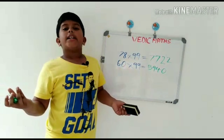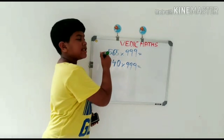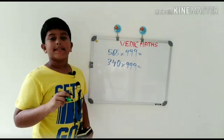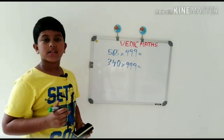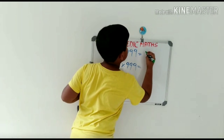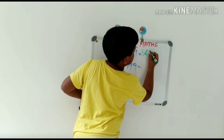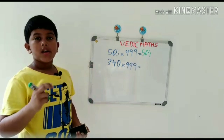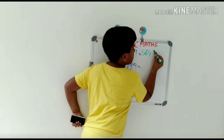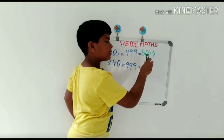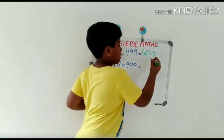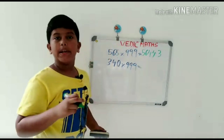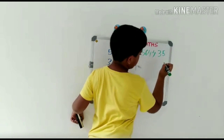Now let's move to a three-digit problem: 565 multiplied by 999. First, we should write the number 1 less than 565, that is 564. And what number should be added to 5 to get 9? That's 4. What number added to 6 to get 9? That's 3. What number added to 4 to get 9? That's 5. Here's the answer: 564435.